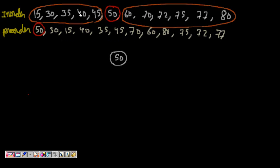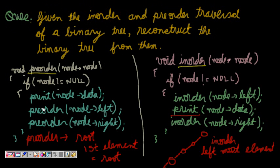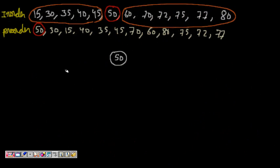Now let's analyze this recursively. We have the left subtree identified. What is the root of this subtree? Looking at the pre-order traversal, the second element is 30, so 30 is the root of the left subtree. Now looking at 30's position in in-order, 15 is in the left subtree of 30, and 35, 40, and 45 are in the right subtree of 30.